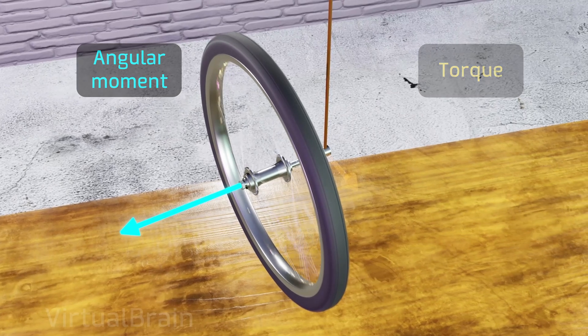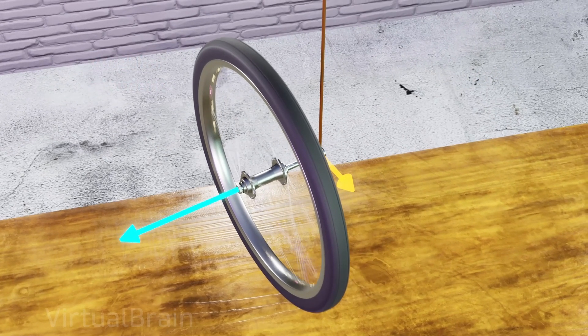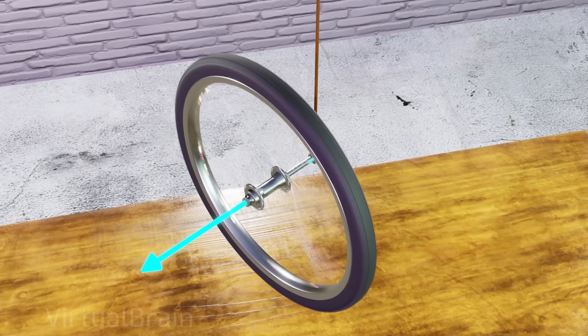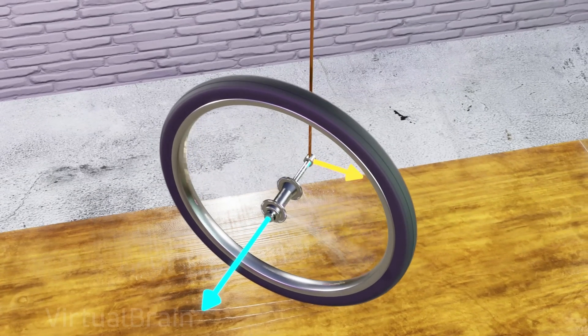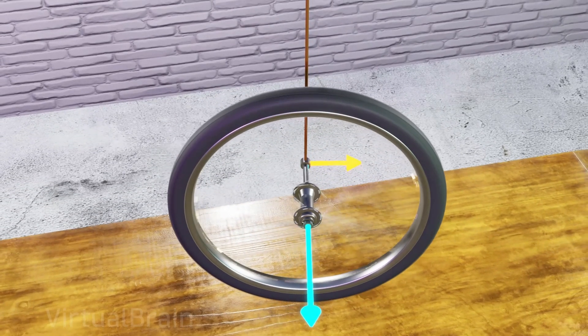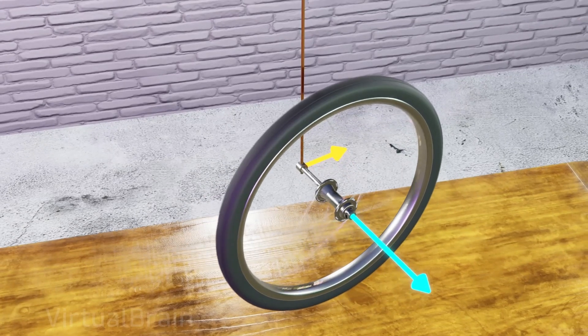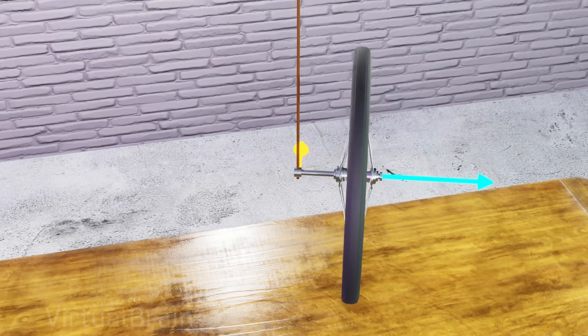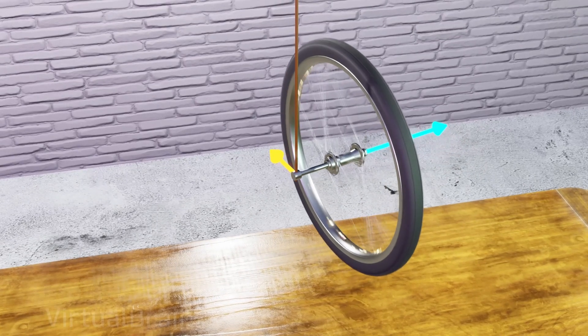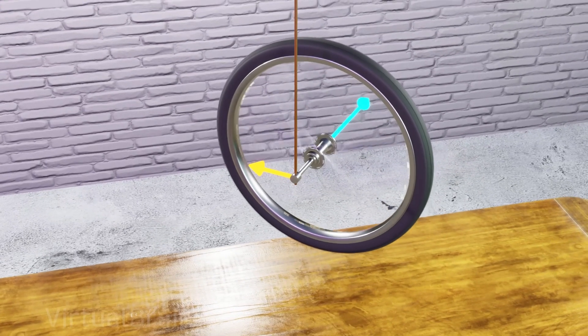Moreover, since it is always true that the torque generated by the weight will be perpendicular to the angular momentum of the wheel, then the wheel will roll continuously, forming a circumference. This relationship between the torque applied to a rotating object and the rotation resulting from precession is what we can use to determine the angular velocity of a system.